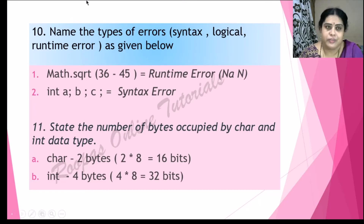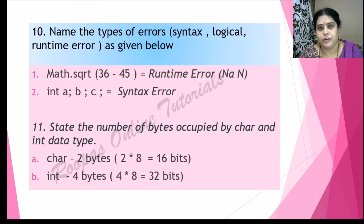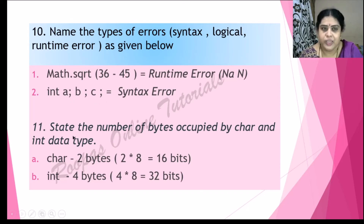Name the types of errors. There are three types: syntax, logical, and runtime errors. For example, Math.sqrt(36 - 45) = Math.sqrt(-9) — this compiles correctly but at runtime gives NaN (Not a Number) because square root cannot take a negative number — that is a runtime error. Another example: int a; b; c; — there should be commas, not semicolons — that is a syntax error.